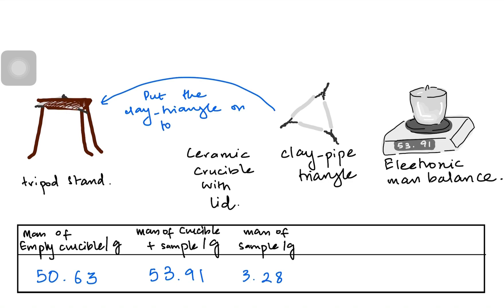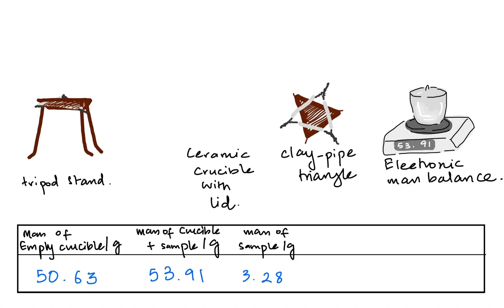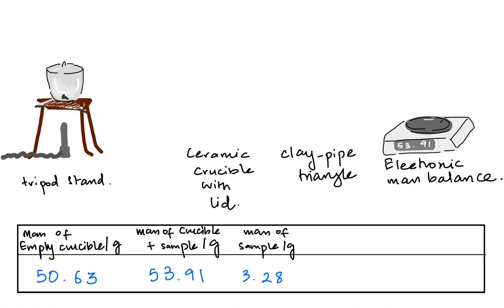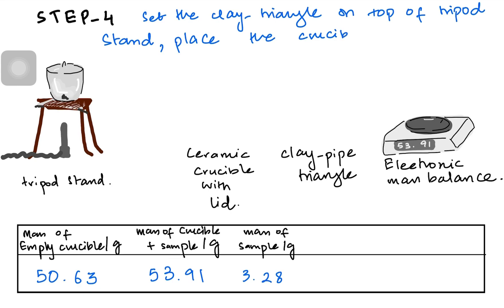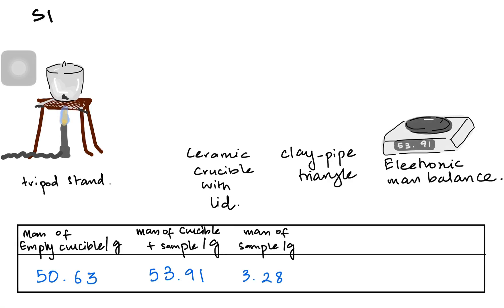In step 4, we put the clay pipe triangle on top of the tripod stand, making sure there is ample space for placing the crucible. We place the crucible containing the sample onto the clay triangle and start the flame. When we apply the flame, we expect the water of crystallization to heat up and escape.